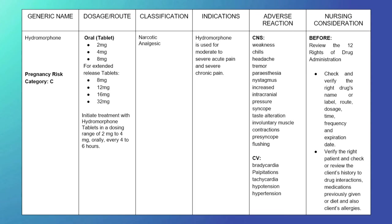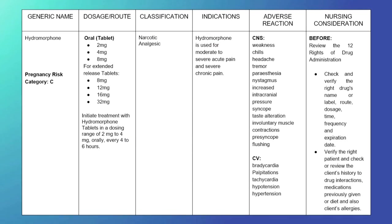Adverse reactions of hydromorphone: CNS — weakness, chills, headache, tremor, paresthesia, nystagmus, increased intracranial pressure, syncope, involuntary muscle contractions, and presyncope flushing. CV — bradycardia, palpitations, tachycardia, hypotension, hypertension. GI — diarrhea, constipation, abdominal pain, decreased appetite. Renal — urinary retention. Respiratory — dyspnea. Dermatologic — urticaria, rash, hyperhidrosis. Respiratory — bronchospasm, laryngospasm. Psychiatric — agitation, nervousness, anxiety, depression, hallucination, disorientation, insomnia, abnormal dreams. Other — physical or psychological drug dependence and drug tolerance.